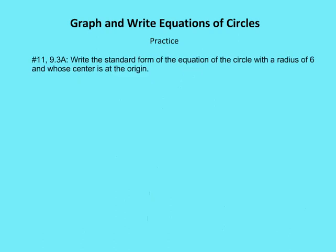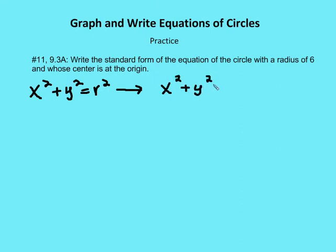Next, question number 11 asks us to write the standard form of an equation of a circle with a radius of 6 and whose center is at the origin. The equation for a circle with a center at the origin is x-squared plus y-squared is equal to r-squared. So all we need to do is plug in the value for the radius: x-squared plus y-squared is equal to 6-squared, or x-squared plus y-squared is equal to 36.